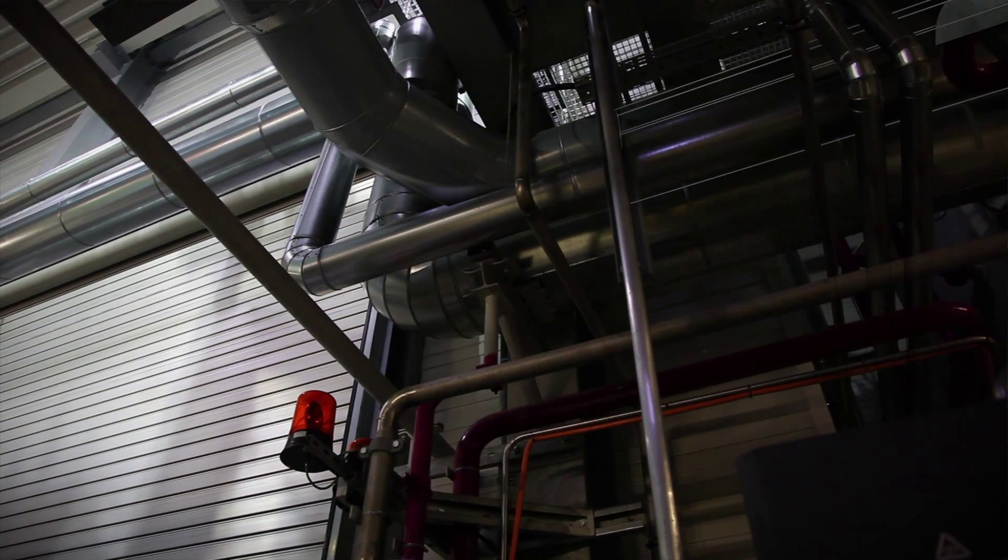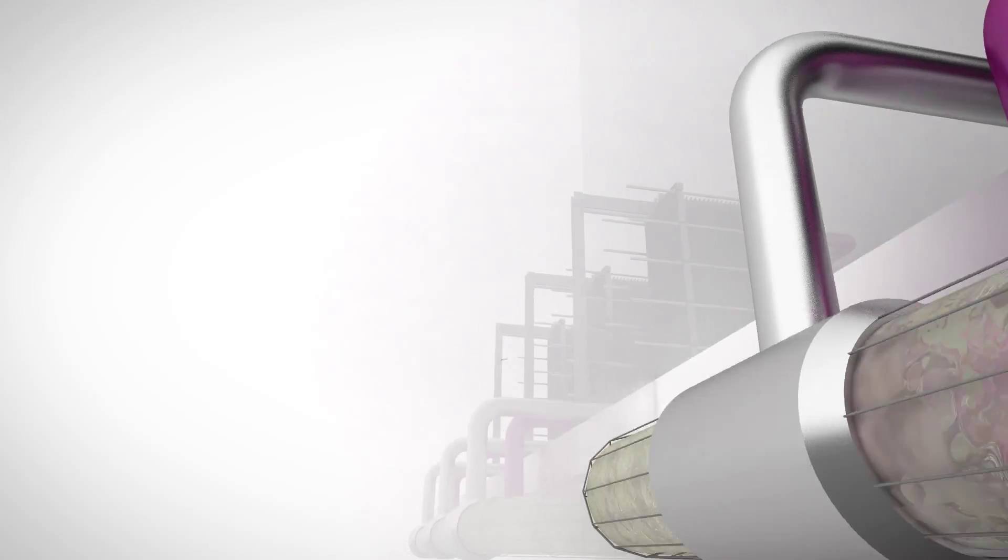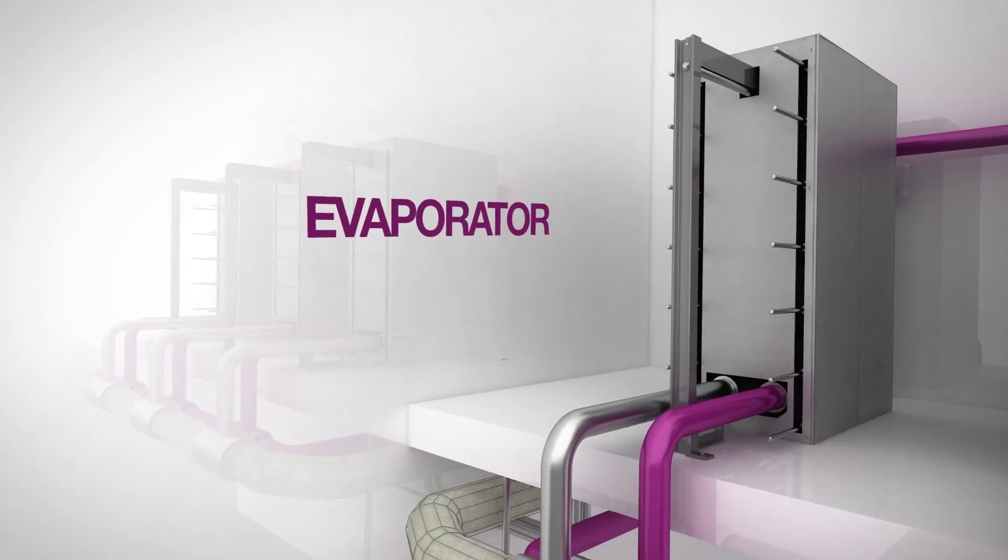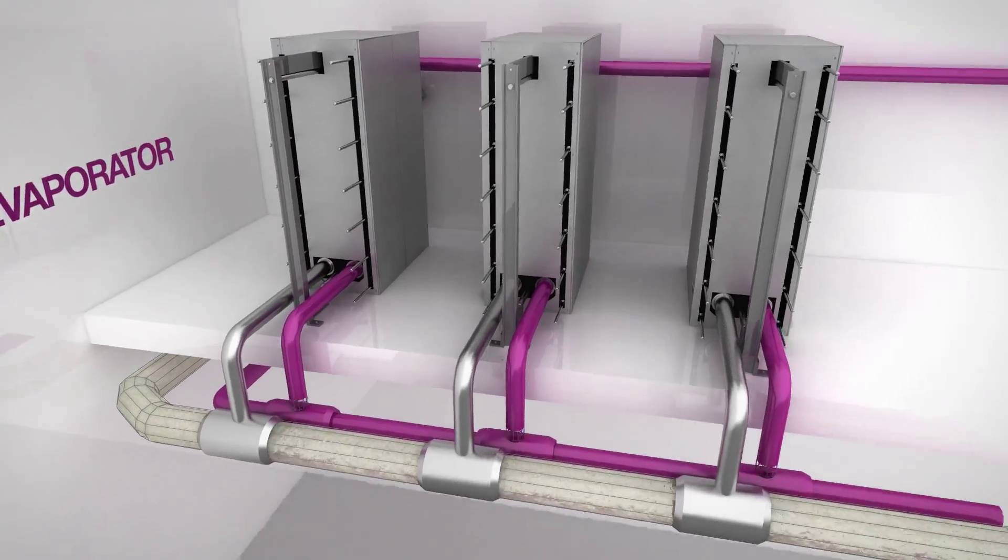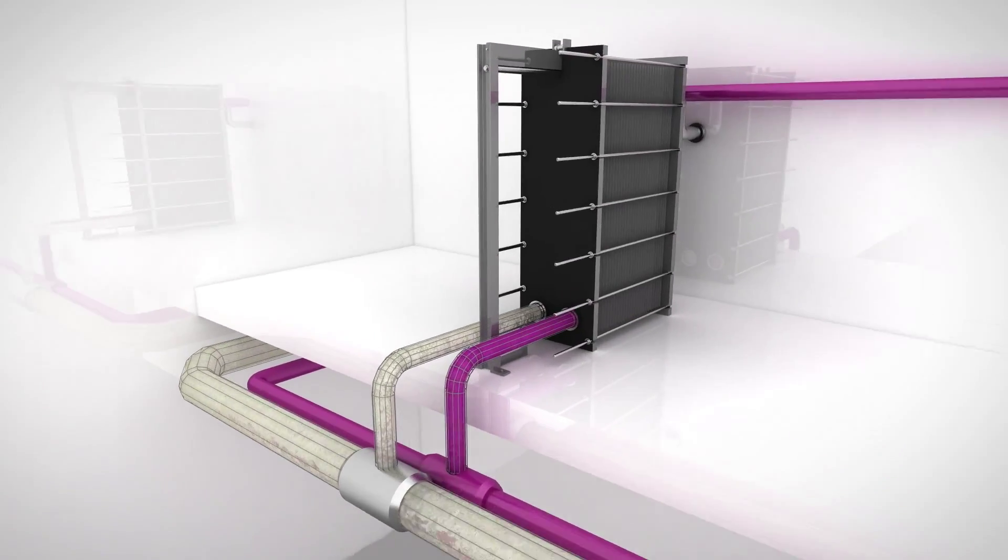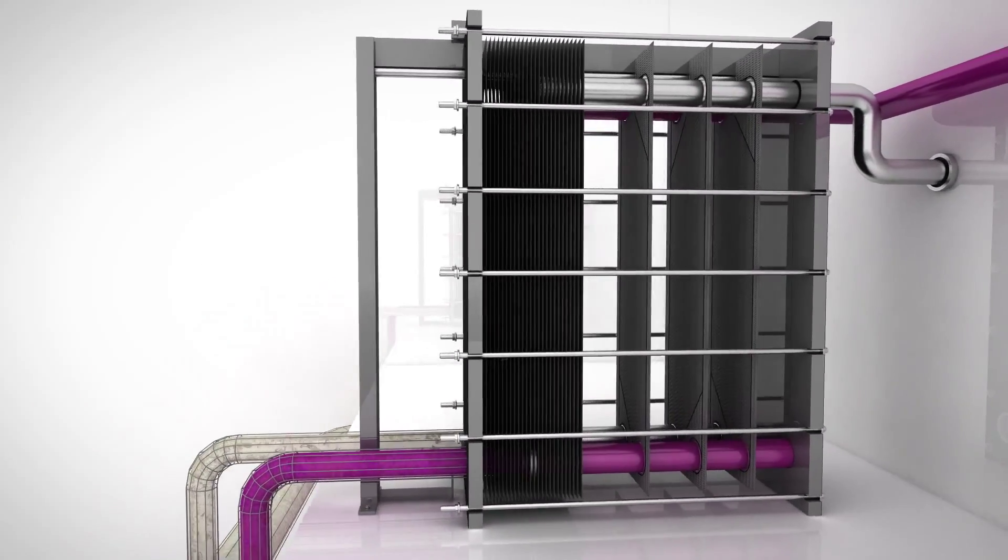Once inside the plant, the geothermal brine flows up to the system's first heat exchanger called an evaporator. The evaporator transfers heat in the geothermal brine into a cooler ammonia-water mixture.